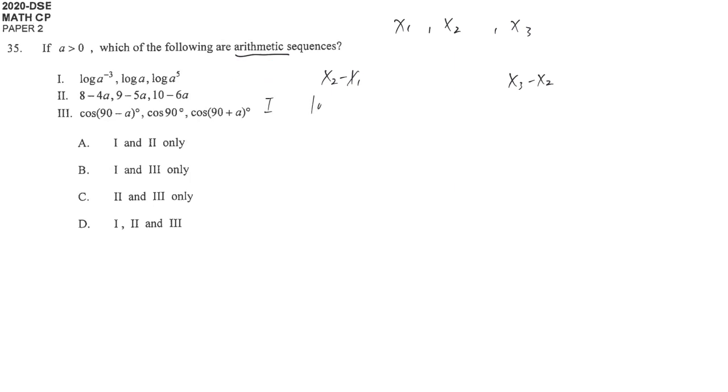For the first one, x2 minus x1 is log a minus log a^(-3), which gives log(a/a^(-3)), that means log a^4. For x3 minus x2, we have log a^5 minus log a, which equals log(a^5/a) = log a^4. These two are exactly the same, so the first one is an arithmetic sequence.